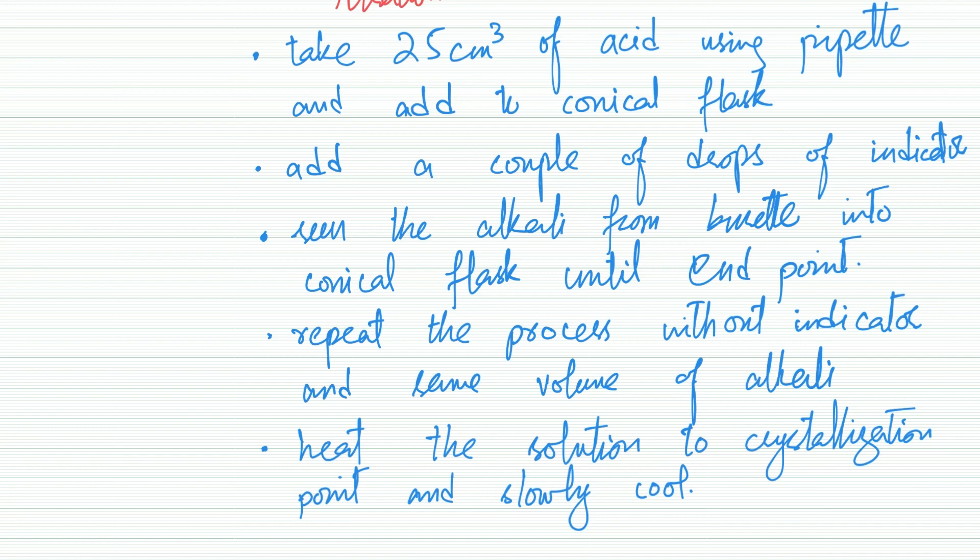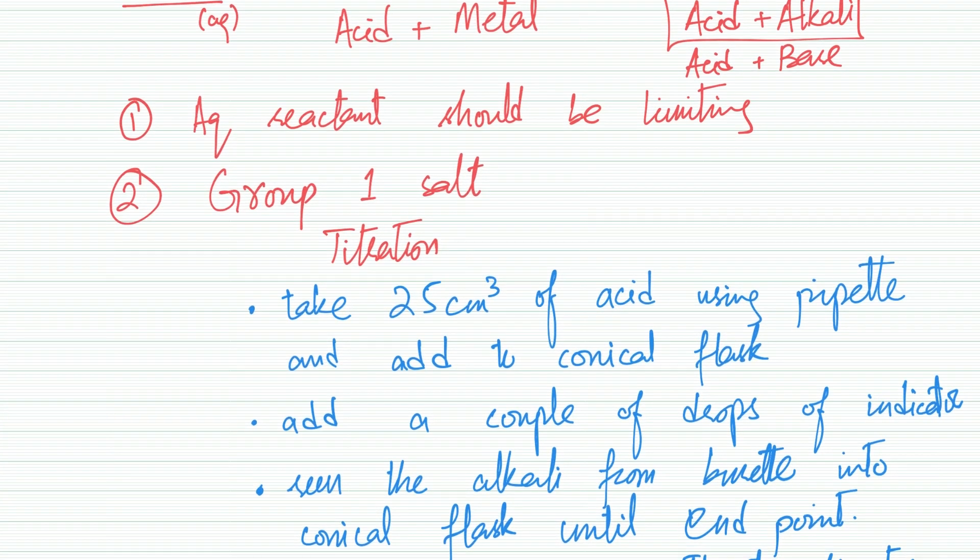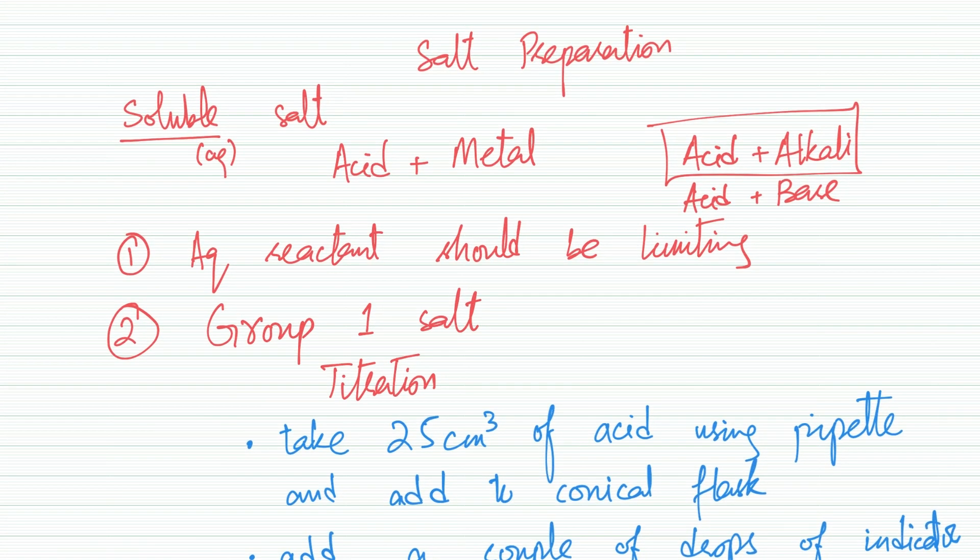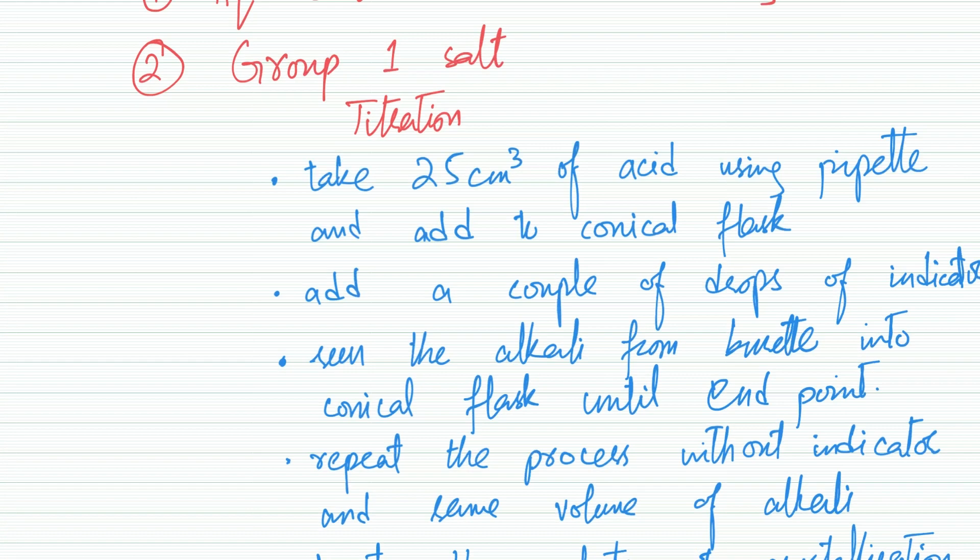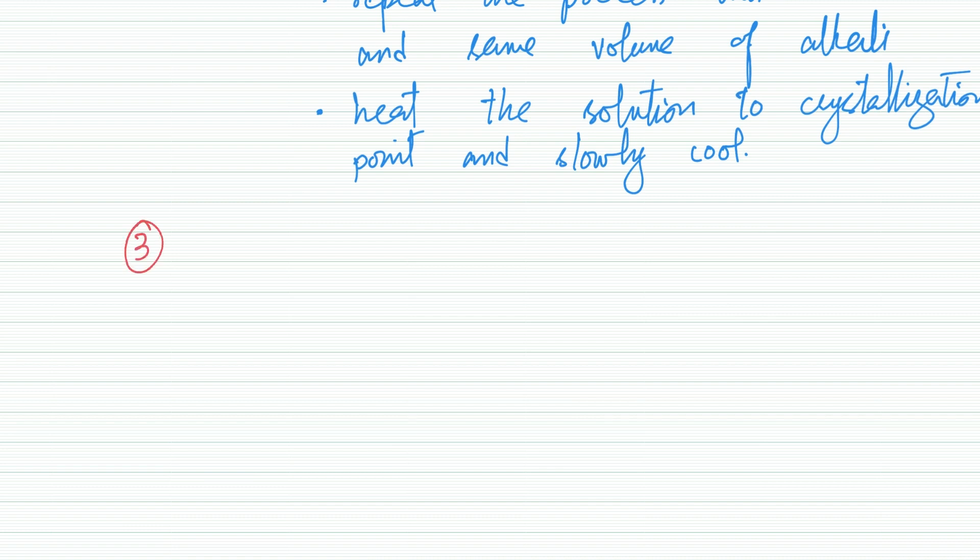What if the salt we are trying to make is not a group one salt but it's still a soluble salt? We still need acid and base. I would suggest going for acid and base because acid will be aqueous but base will be solid, so you can get the aqueous part in limiting, which is the first rule we need to adhere to.